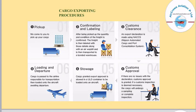Once the freight receives customs approval, it is directed towards storage. The cargo granted export approval is stored in a ULD container that will be loaded onto an aircraft. When the freight is loaded on the aircraft, it is ready for departure. The cargo is passed to the airline responsible for transportation, then loaded onto the aircraft awaiting departure. That is how all the exporting procedures are done.